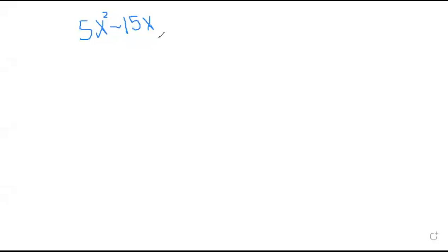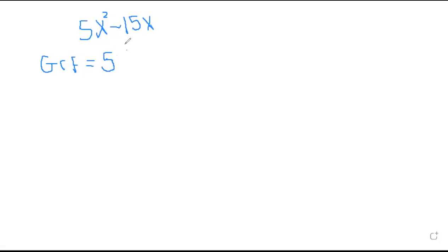Hello, today we are going to study factoring by taking GCF. In the previous lesson we studied how to find the GCF. For example, with 5x² minus 15x, the GCF is found by choosing 5 from 5 and 15, and x with the least exponent. So the GCF equals 5x.